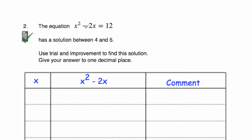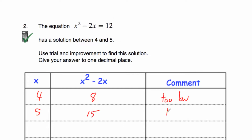The next question: the equation x squared minus 2x equals 12 has a solution between 4 and 5. Use trial and improvement to find this solution to one decimal place. Let's try 4: 4 squared minus 2 times 4 equals 8. We want 12, so that's too low. Let's try 5: 5 squared minus 2 times 5 equals 15. We want 12, so that's too high.